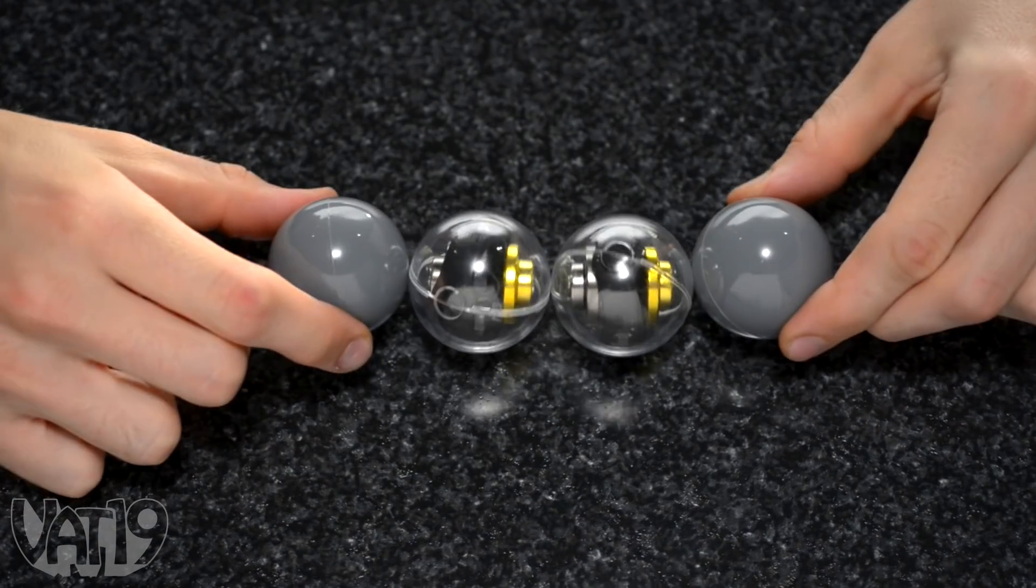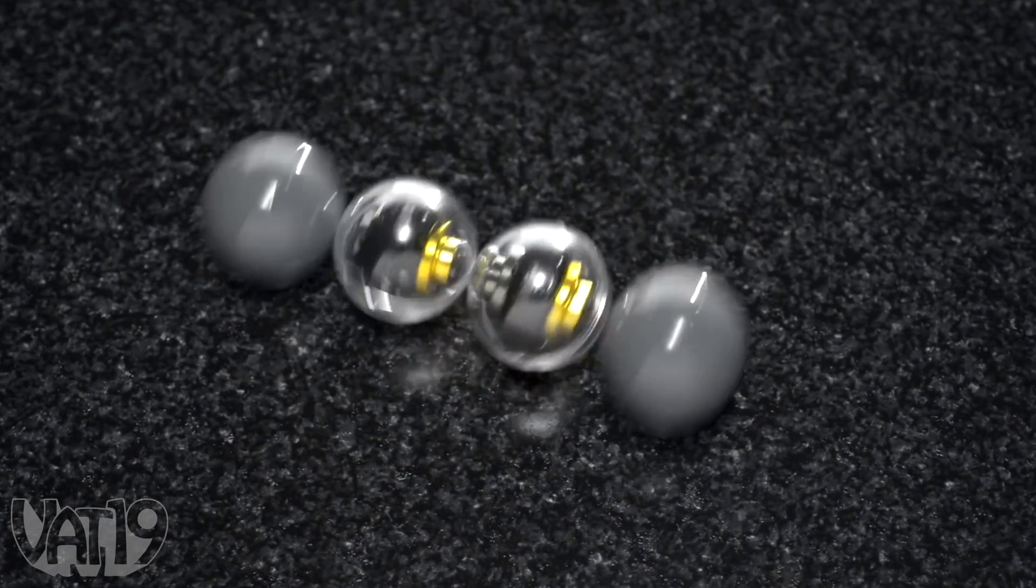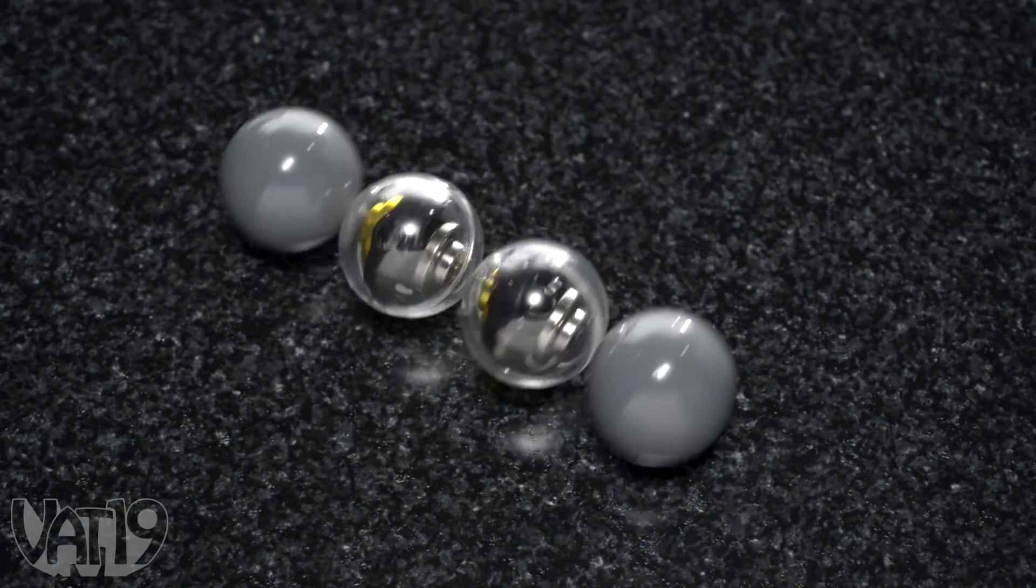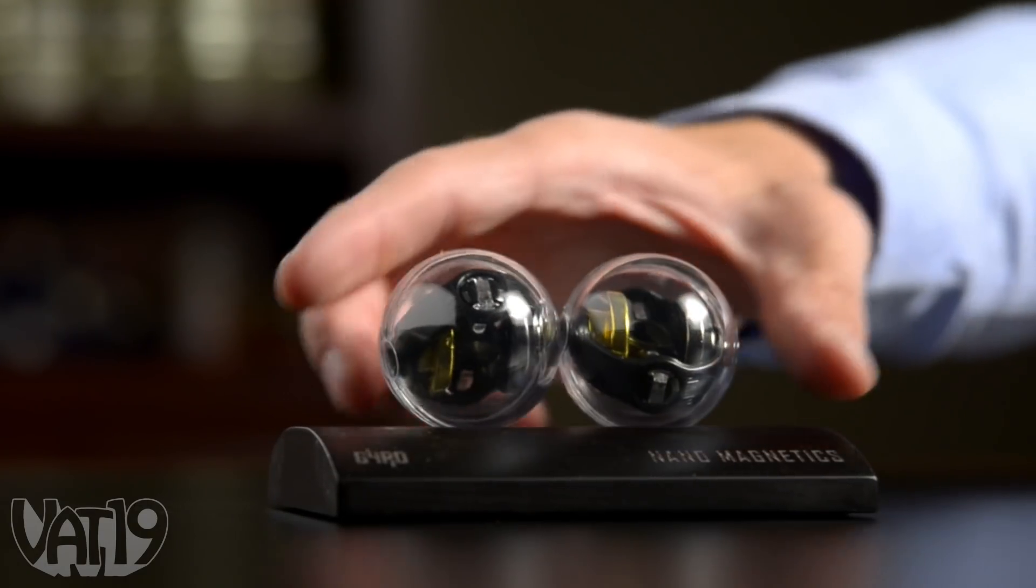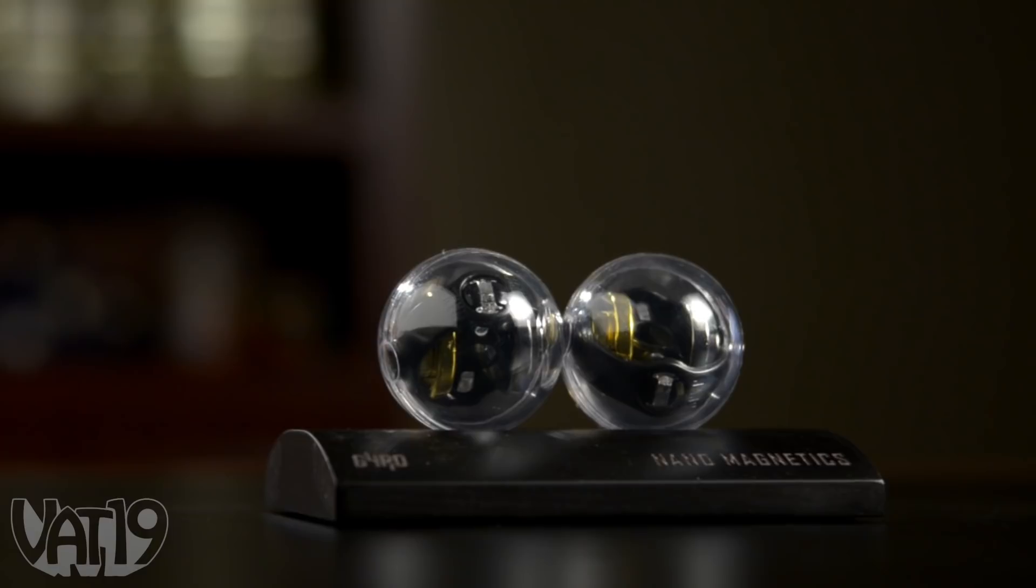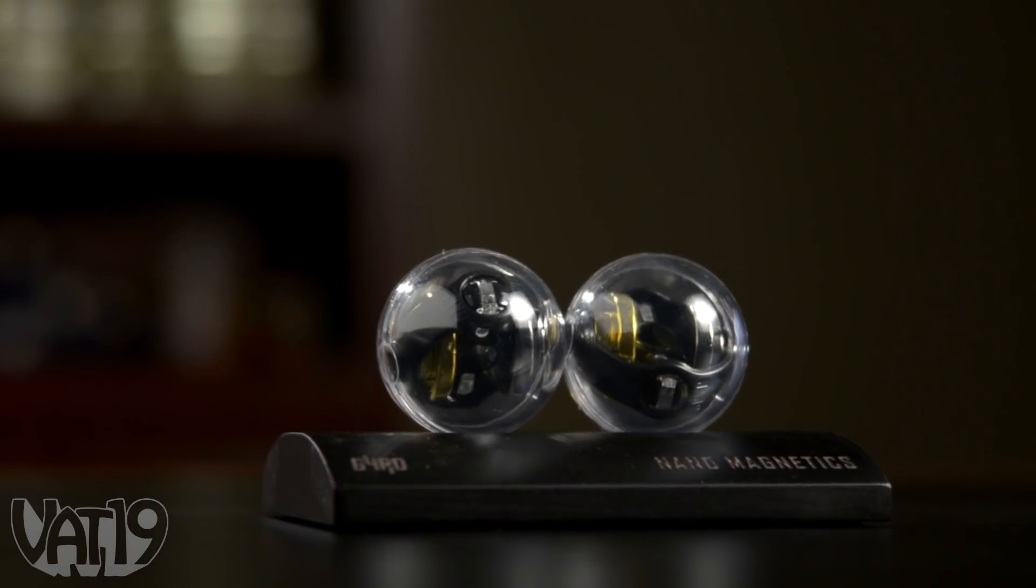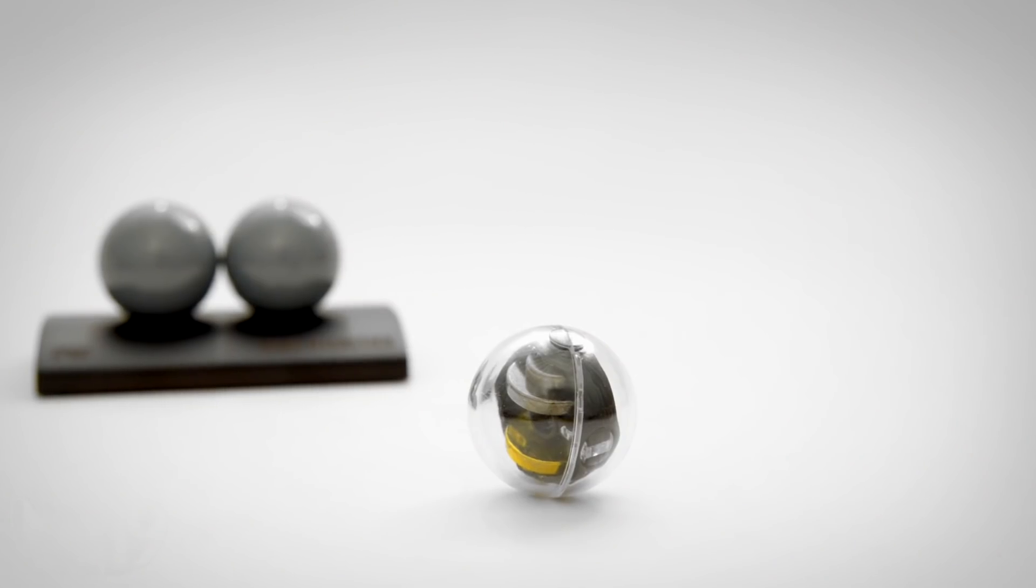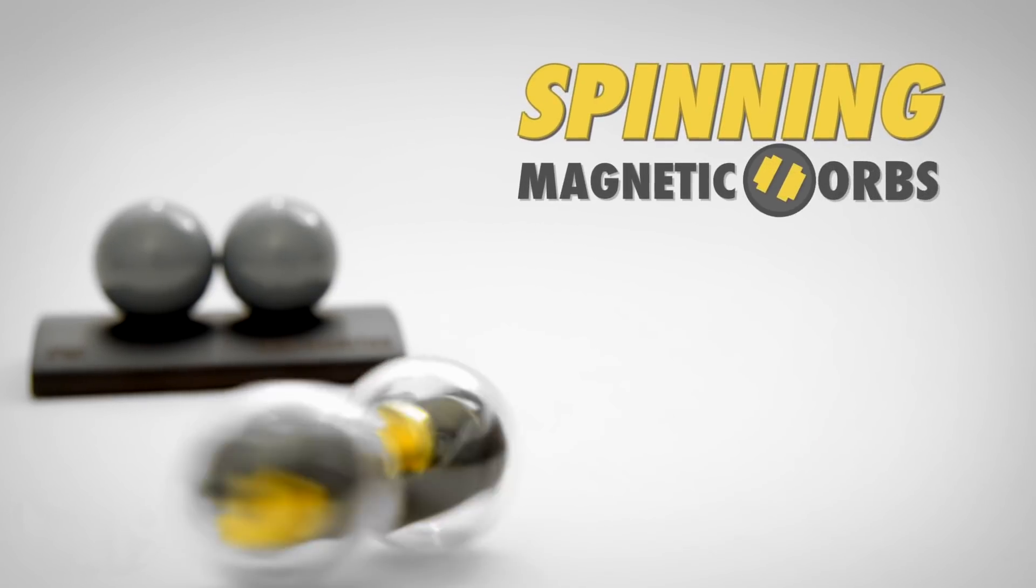Each pair of spinning magnetic orbs comes with two additional spheres containing an encapsulated ball magnet. And when you're ready to disguise your magnetic toys as desk art, set them on the included wooden display stand. Discover magnetism from a new perspective with spinning magnetic orbs.